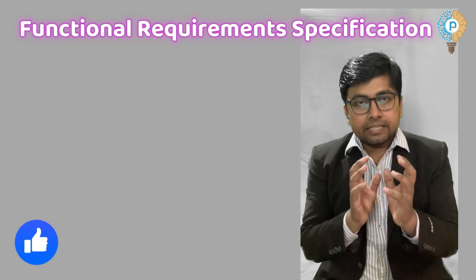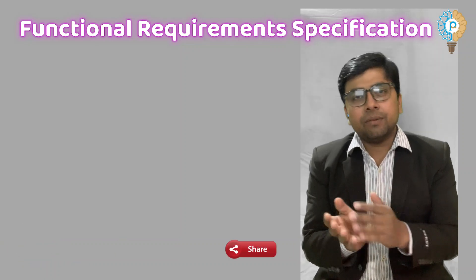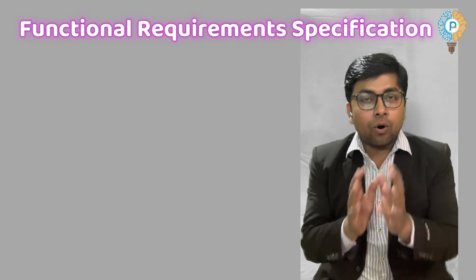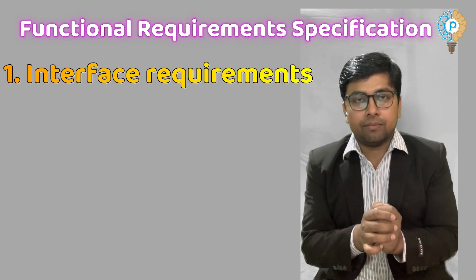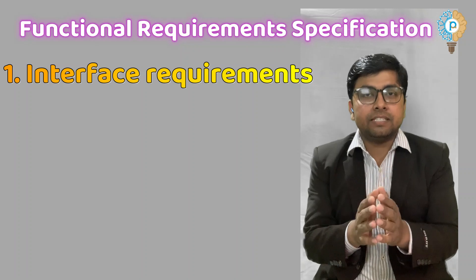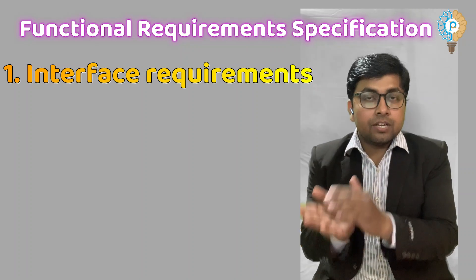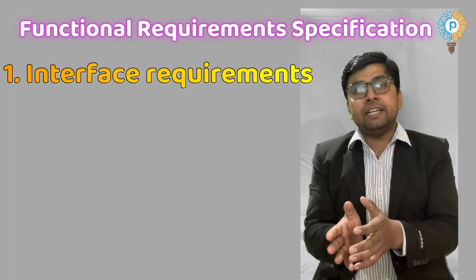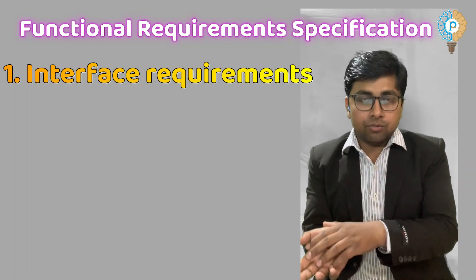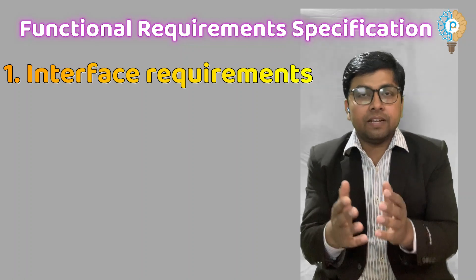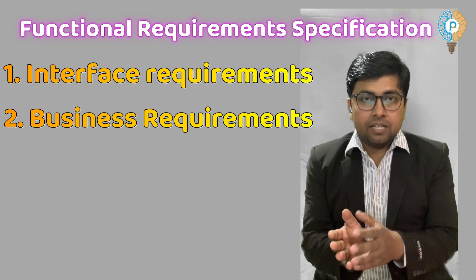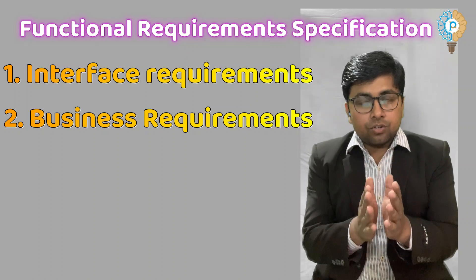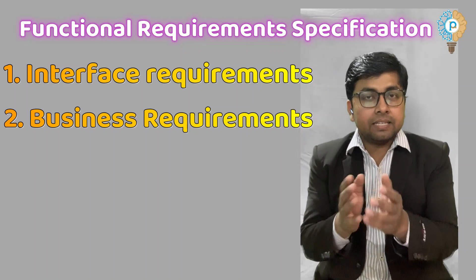For computer system validation, we need to satisfy many requirements, and your functional requirement specification document shall define all of these. The first requirement is interface requirement. Your computer system is driven by some user, so your user should be interlinked and have a relationship with your computer system. This documentation helps us build and specify that relationship between the user and the computer system, fulfilling the interface requirement. Next is business requirement — through this documentation you are specifying your functional requirement.